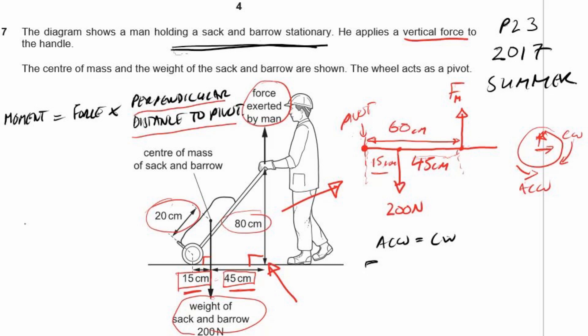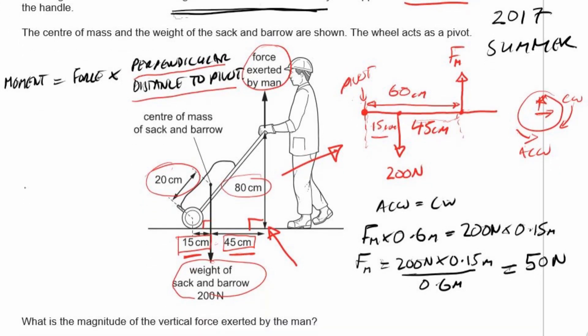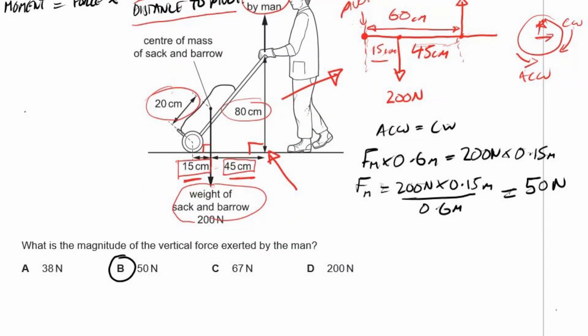Our anticlockwise moment is going to be the force from the man multiplied by 0.6 metres. And that's going to be equal to our clockwise moment, which is 200 newtons multiplied by 15 centimetres, or 0.15 metres. So that means I can find the value for my force provided by the man by rearranging that equation. And that will give me a value of 50 newtons. There we go. So let's come down here. And the answer is B, 50 newtons. So there we are.